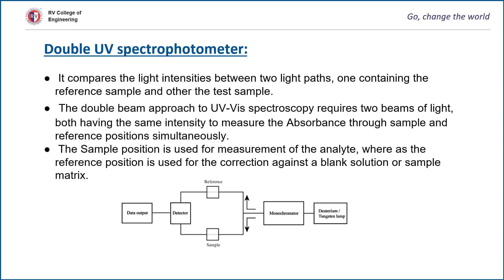The double beam UV spectrophotometer compares the light intensities between two light paths, one containing the reference sample and the other the test sample. The double beam approach requires two beams of light, both having the same intensities, to measure the absorbance through sample and reference positions simultaneously. The sample position is used for measurement of the analyte, whereas the reference position is used for correction against a blank solution or sample matrix.